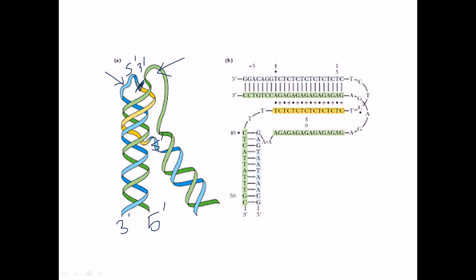From the bending point onward, the same strand continues. Following the three prime to five prime strand, we can see it comes down along the structure. Previously, two strands were interacting as in common DNA, but when the strand starts to bend, an extension of the strand begins to coil with the double-stranded DNA.